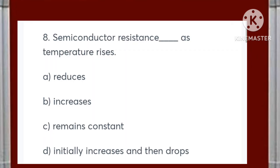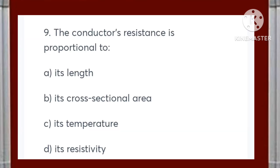Semiconductor resistance does what as temperature rises? Options are: reduces, increases, remains constant, or initially increases then drops. Answer is A — reduces. The conductor's resistance is proportional to: its length, its cross-sectional area, its temperature, or its resistivity? Answer is A — its length.